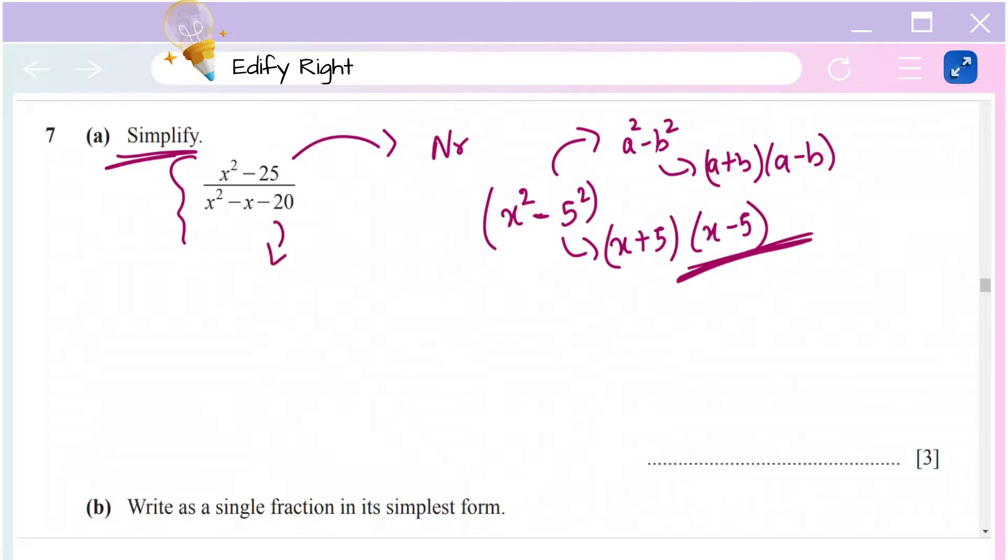Next let's talk about the denominator. The denominator has x² - x - 20. Here you have to split the middle term to factorize the expression. I'm going to take it as x² - 5x + 4x - 20.